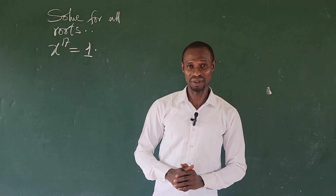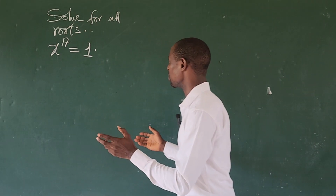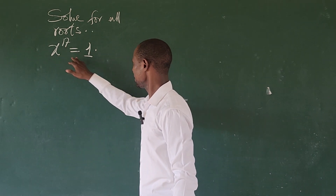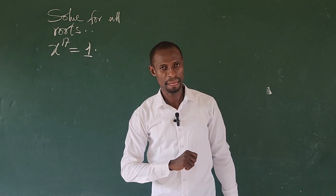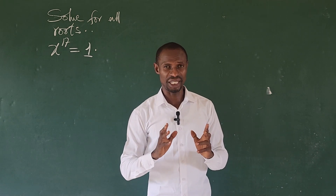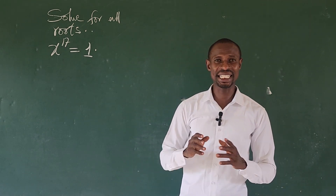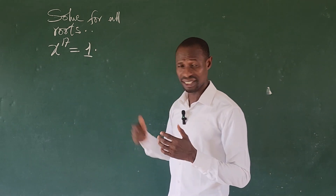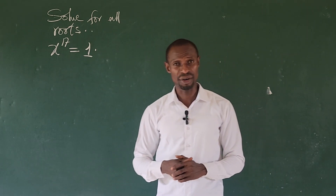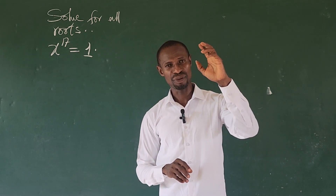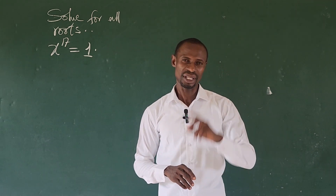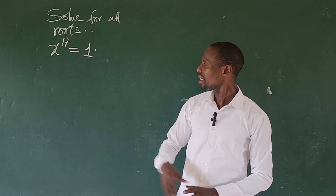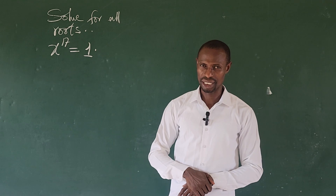Welcome to today's tutorial. Today we have a question on the board. The question reads: solve for all roots if x to the power of 17 equals 1. When you're looking at this expression, you'll discover that we have been asked to solve for 17 roots that satisfy the equation, because the power of our variable shows the number of roots. So how do we get these 17 roots to this exponential challenge?